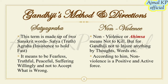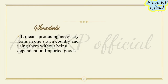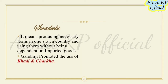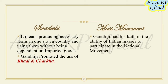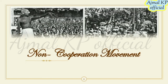Those are the two methods Gandhiji followed — Satyagraha and non-violence — towards the British government. According to him, non-violence is a positive and active force. Swadeshi means producing necessary items in one's own country and using them without being dependent on imported goods. We have to use our own products and avoid or reject others' products, clothes, food, and whatever items we are using. Gandhiji had faith in the ability of Indian masses to participate in the national movement.